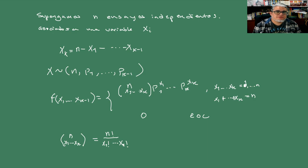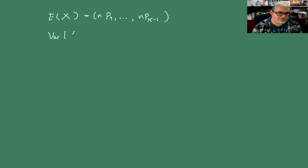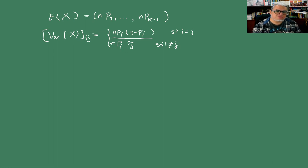La esperanza de este vector pues la podemos escribir como n por pi. El elemento ij-ésimo de la matriz de varianza es n·pi·(1-pi) si i es igual a j, o bien -n·pi·pj si i es distinto de j. En la diagonal tenemos esos elementos y fuera de la diagonal van de este modo.